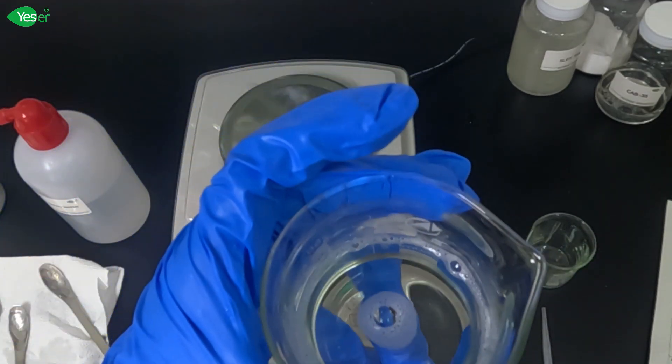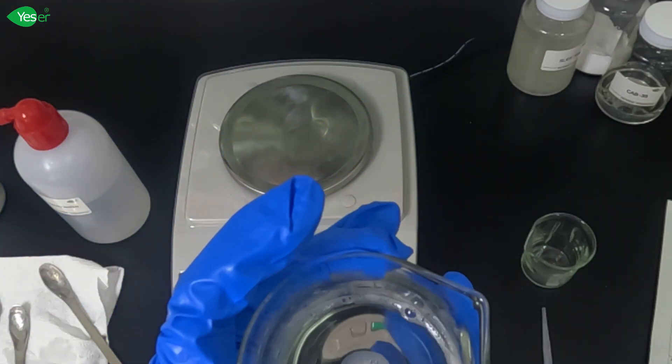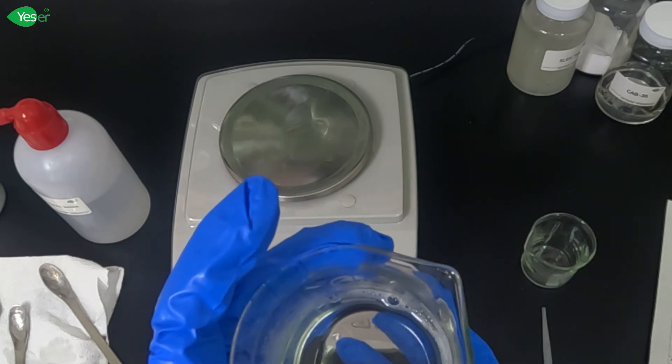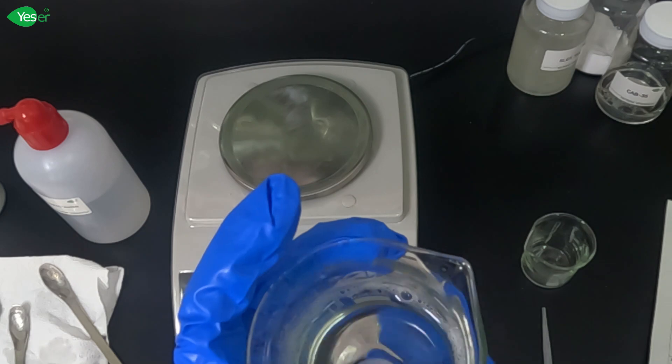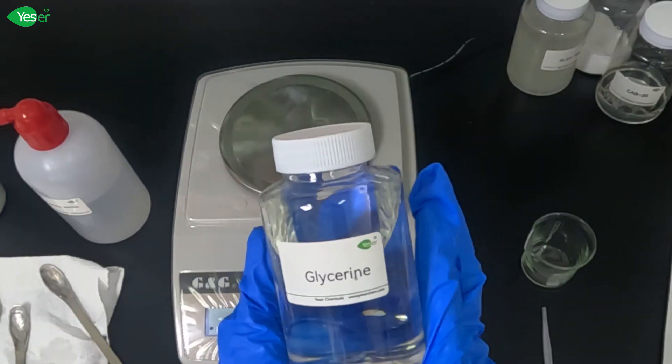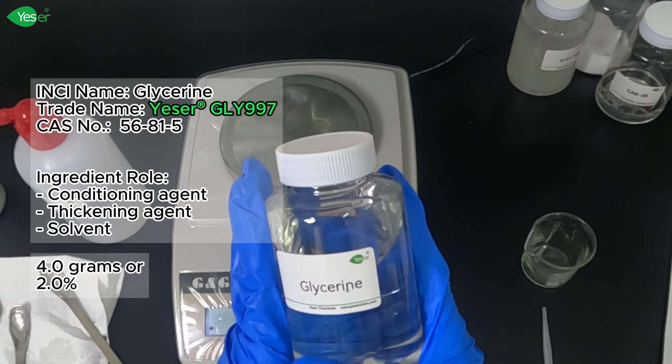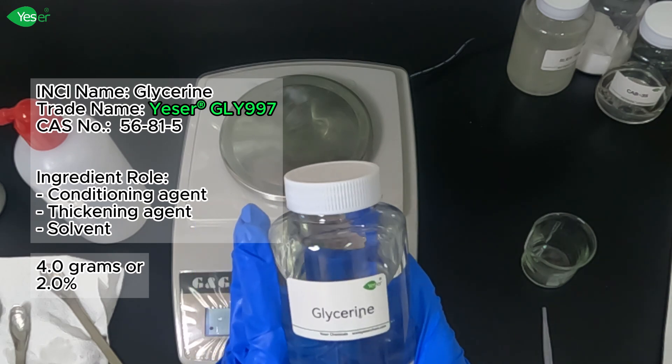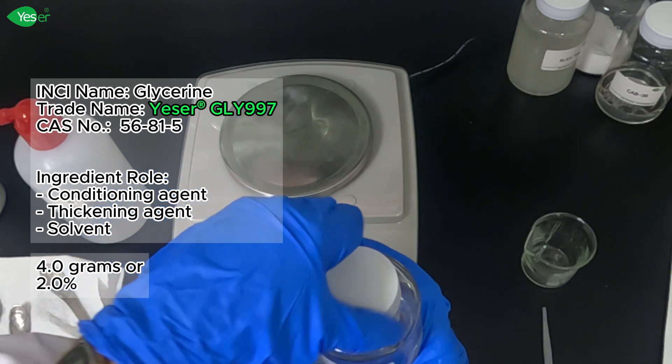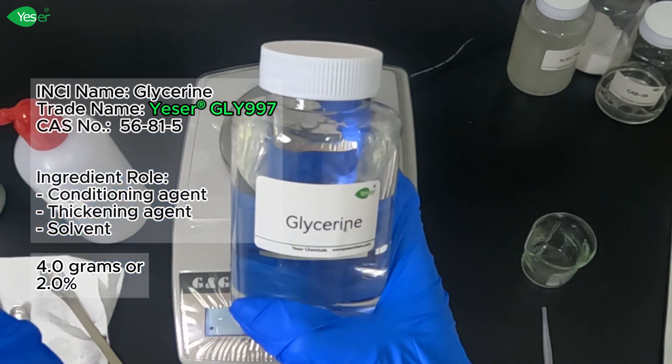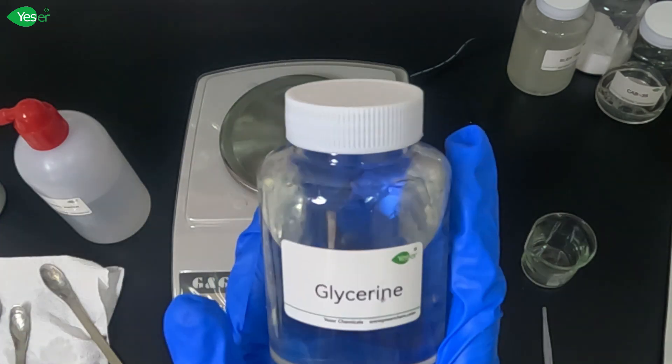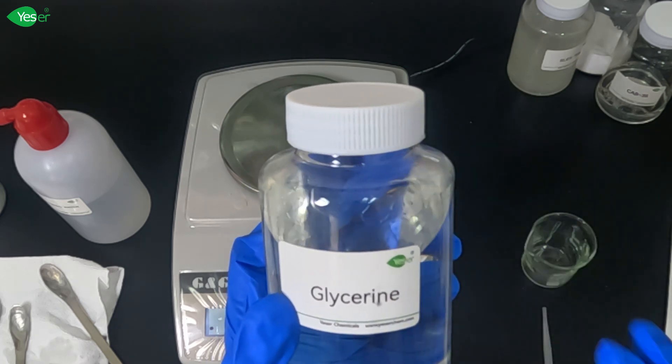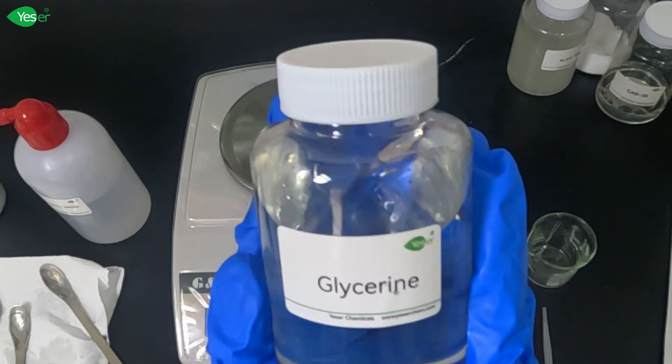Now that our surfactants are fully dissolved, we will reduce the temperature of the solution to around 50 degrees Celsius and introduce our glycerin and PEG7 glyceryl cocoate into the mixture. Our next ingredient is glycerin, our moisturizer. We will add about 4 grams of this, 2% for the formula. Glycerin will help balance out the strong cleansing agents of our surfactants. This combination ensures that your product cleans effectively without stripping your skin's natural barrier, leaving it soft and hydrated.